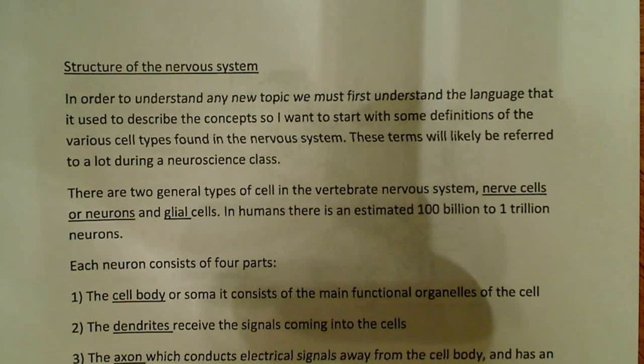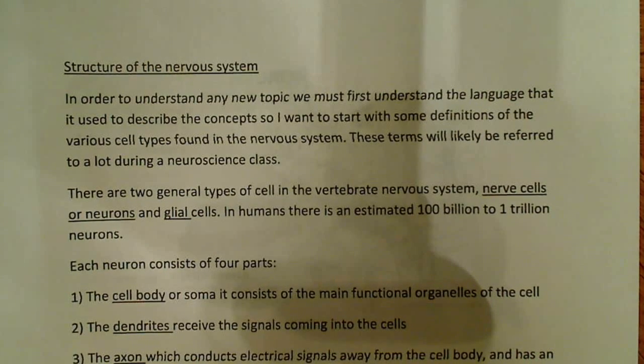In humans, there's an estimated 100 billion to 1 trillion neurons. So think about that for a second — that's a whole lot of neurons.